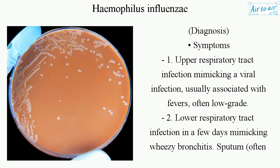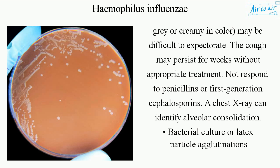Diagnosis. Symptoms: 1. Upper respiratory tract infection — mimicking a viral infection, usually associated with fevers, often low-grade. 2. Lower respiratory tract infection in a few days, mimicking wheezy bronchitis. Sputum, often gray or creamy in color, may be difficult to expectorate. The cough may persist for weeks without appropriate treatment.